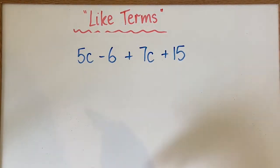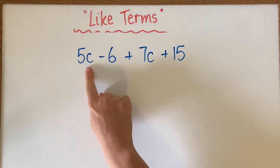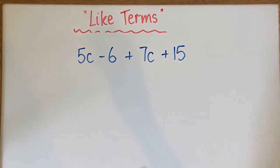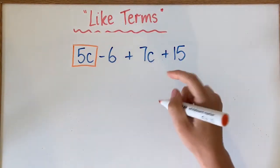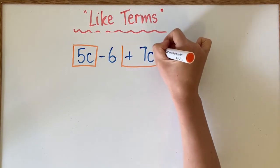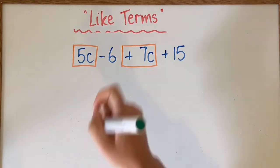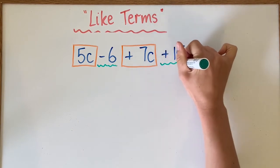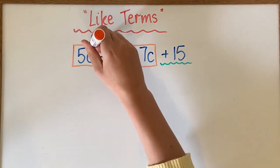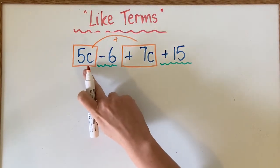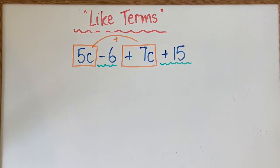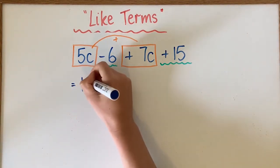This time we've got four terms, and we need to determine what is like and what is not. I can see I've got 5C and positive 7C — they both have a C, the same variable attached to it, or the same pronumeral. And then I can see I've got negative 6 and positive 15. Those are like because they don't have a pronumeral or variable that goes with them. The C terms are going to get added: 5 plus 7 is 12C.